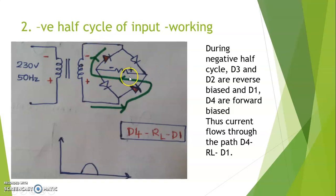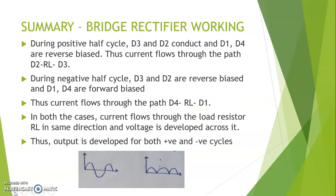Since in both the positive and negative half cycles the current through the resistor flows from right to left, the direction of the current does not reverse. Hence, the output is obtained such that the direction of the current does not change for both positive as well as negative half cycles. The summary of the working of the bridge rectifier is shown here.